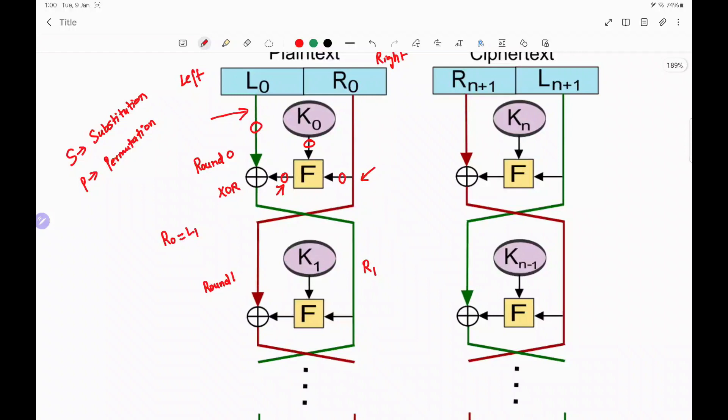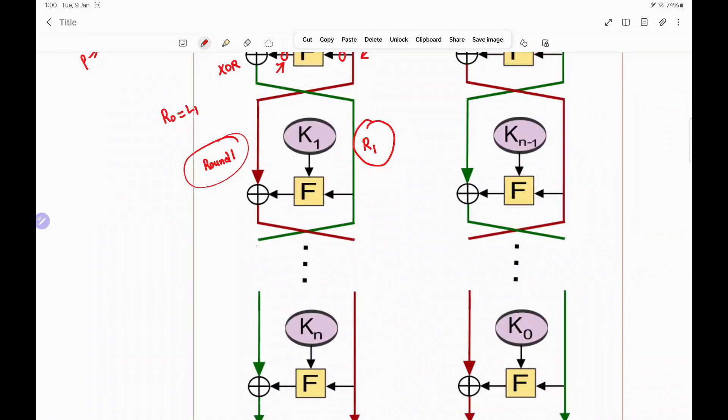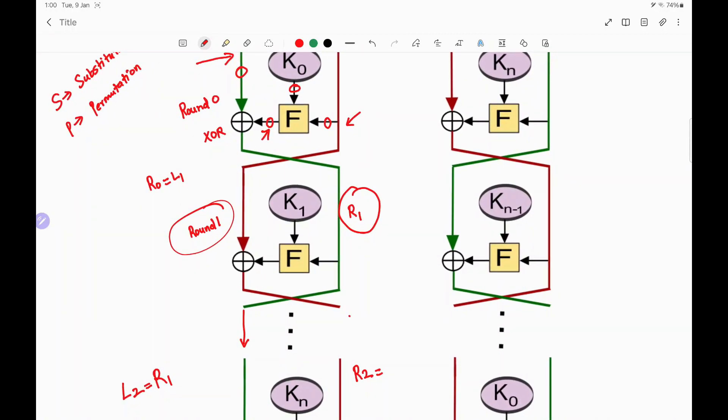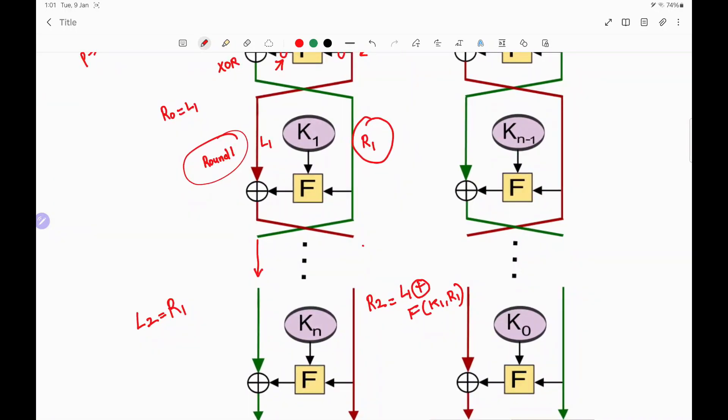So in the same fashion, now we are in round one. So what happens in round one is this R, that is this right half will now remain unchanged and it will go as the left half for the next round. So I can say that what will be L2 now? L2 is nothing but it is R1. And similarly, what is R2? R2 is nothing but the output of the XOR operation. That is, I can say that output of XOR operation means over here, we are getting something called as L1, right? So L1 XOR function. Inside that function, we are having two inputs. That input is nothing but K1 comma R1. So this is nothing but your R2.